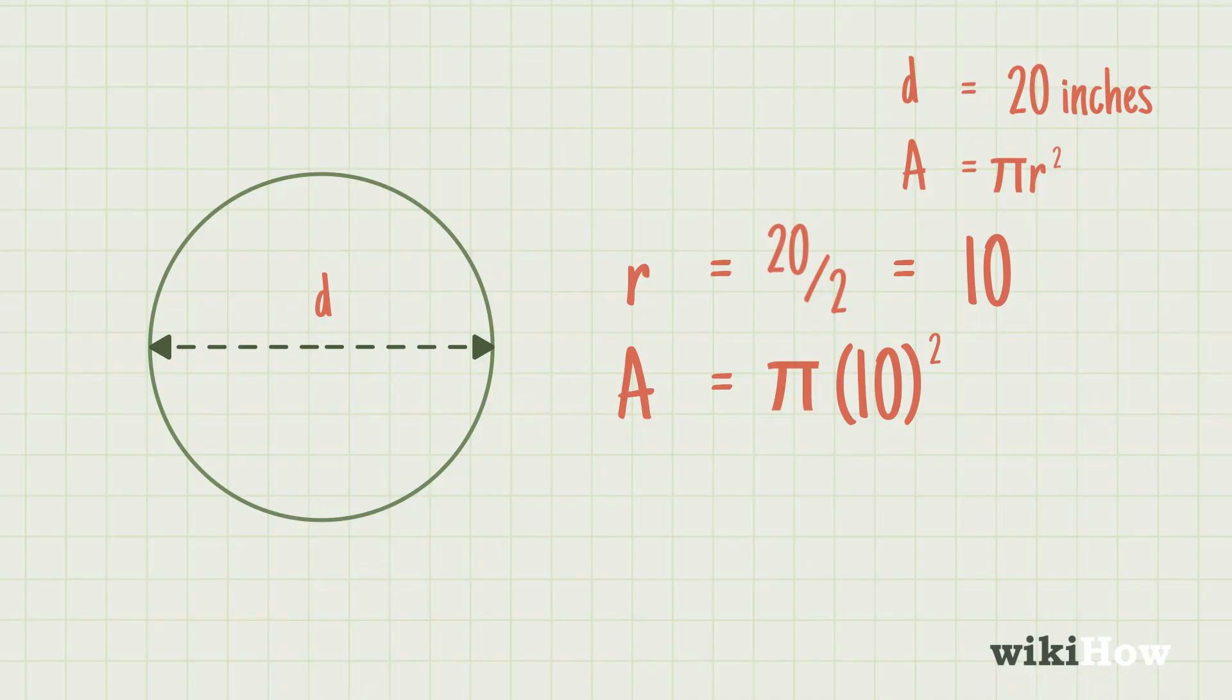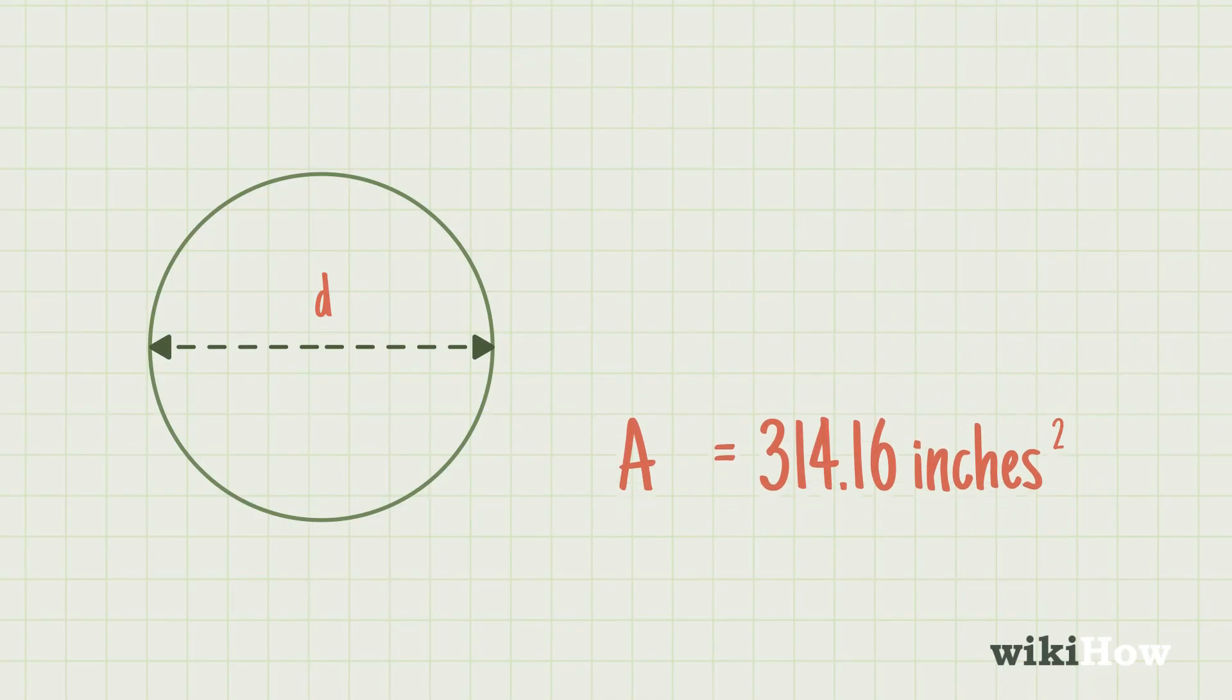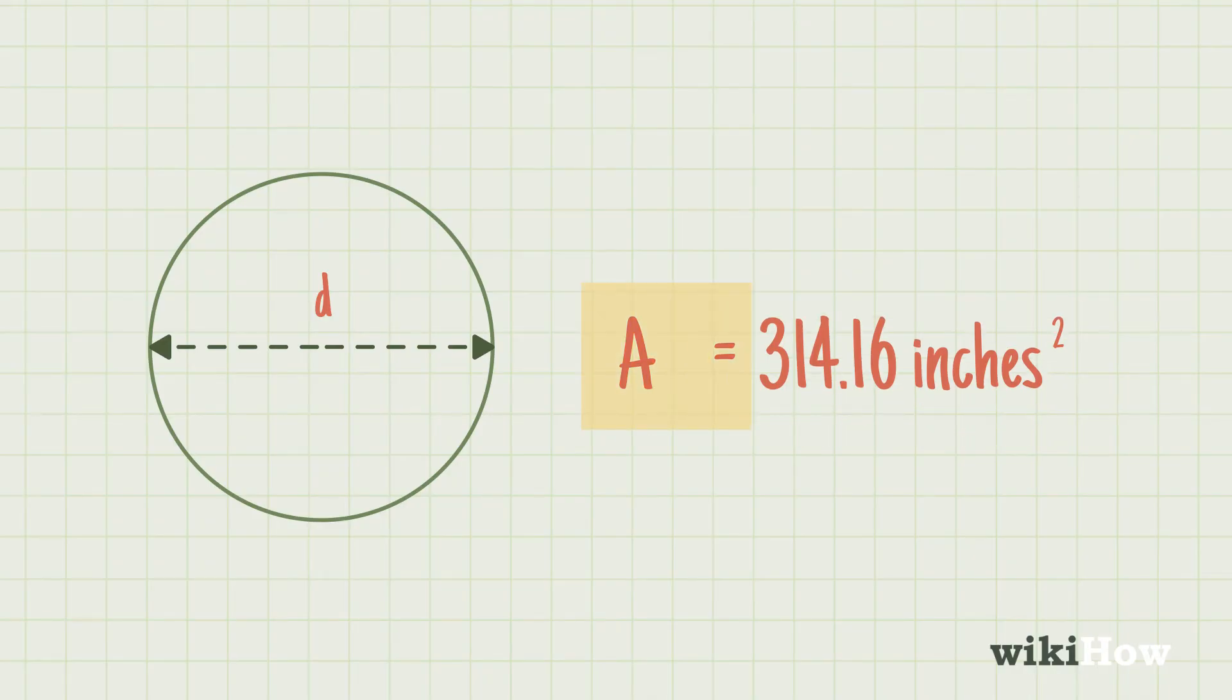Area equals pi r squared. 10 squared is 100, and 100 times pi is 314.16. Therefore, the area of the circle is 314.16 inches squared.